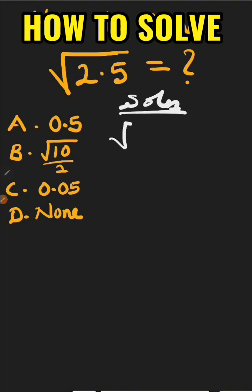Root 2.5. We can remove this decimal point by saying root of 25 divided by 10.